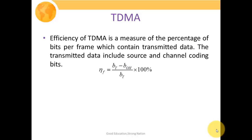The efficiency of TDMA is the measure of the percentage of bits per frame which contain transmitted data — how many bits per frame are information bits. The transmitted data includes the source and channel coding bits. The efficiency of a TDMA frame is given by: η = (BT − BOH) / BT, and multiplied by 100 for percentage.